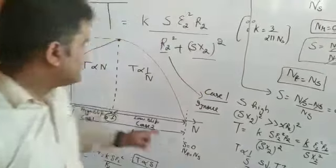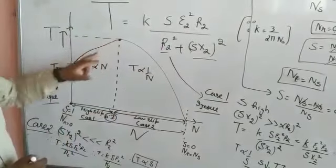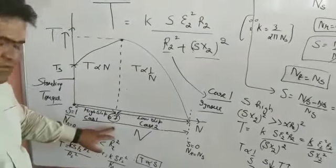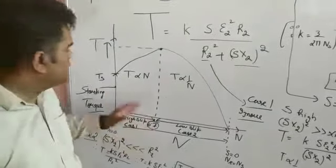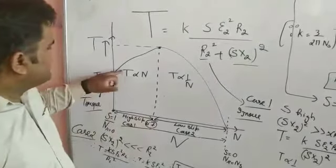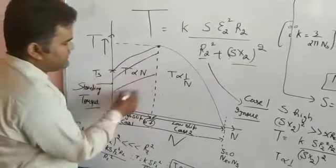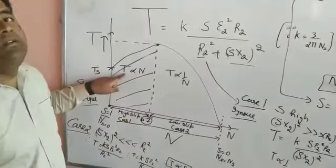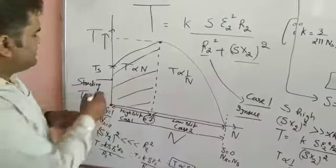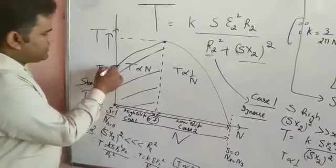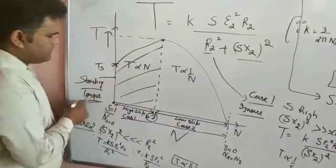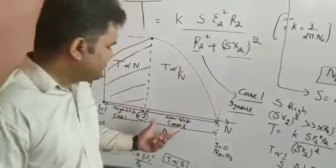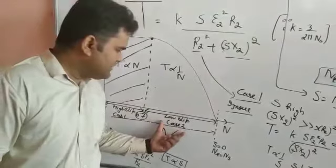In this high slip region, torque is increasing as speed increases. This is the starting torque region. So in this portion of the curve, torque increases as speed increases from zero.